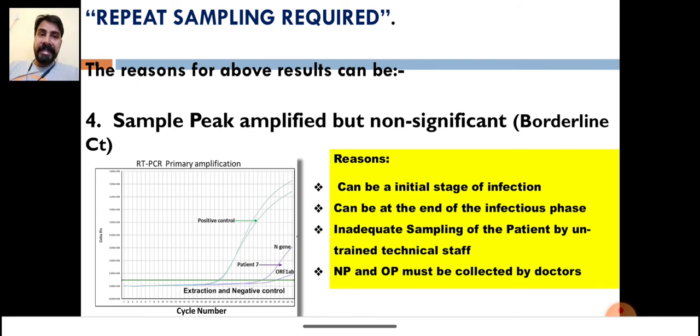For example, the cutoff CT for reporting a positive result currently—the guideline says less than 35 will be declared as positive. So tell me, if I get a sample with CT 35.5, what will I do?